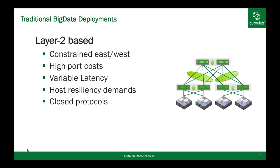If we look at the traditional big data deployments out there, they are often suggesting an L2-based network. This can constrain your east-west bandwidth because the L2 network is often only deployable in pairs of devices. I can have two TORs, I can have two spines, but when I need more bandwidth, those do not necessarily allow us to continue to scale. I often have to buy bigger and bigger devices to continue to build this network out.